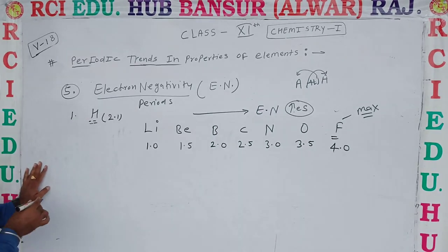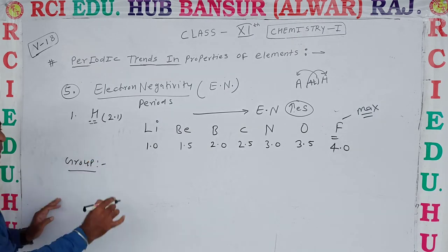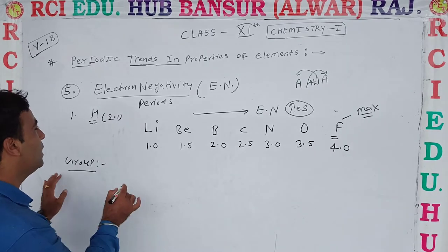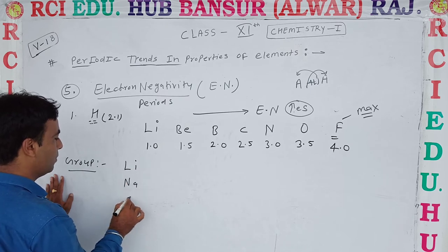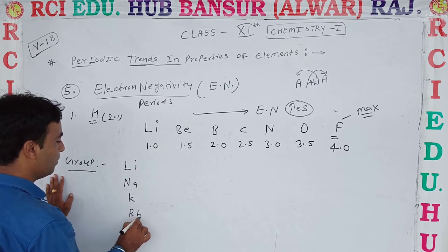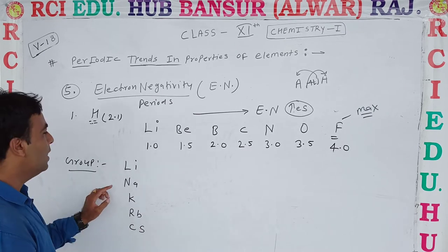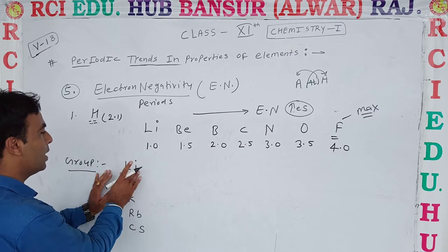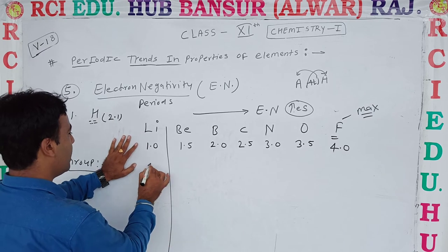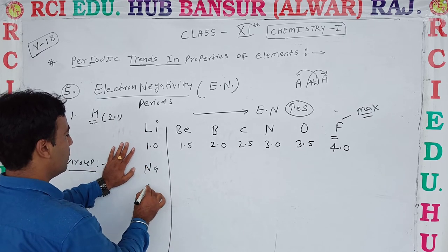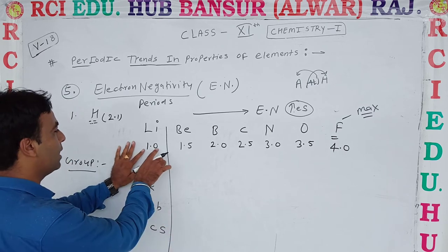Now let's talk about the group. The elements in Group 1 are: Lithium, Sodium, Potassium, Rubidium, Caesium. These are the elements we have in mind. Let's look at their electronegativity values.